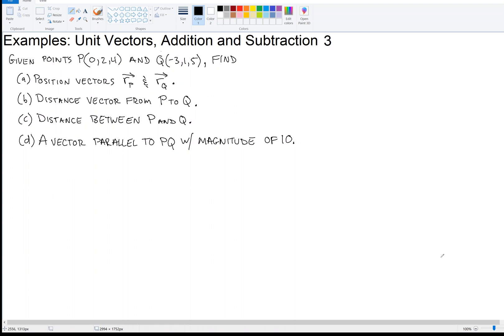Alright, we are talking about unit vectors and the addition and subtraction of vectors. I've got an example given points P, which is 0, 2, 4, and Q, which is negative 3, 1, 5.